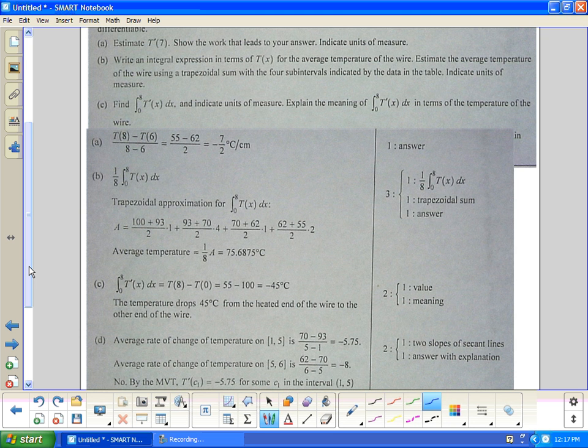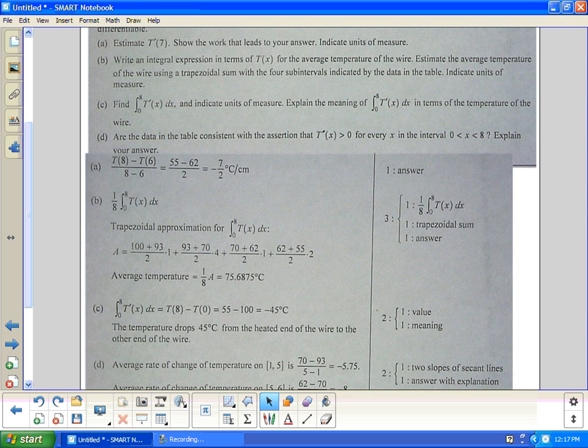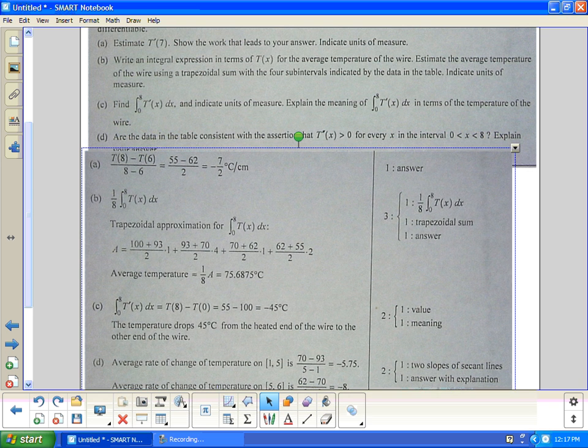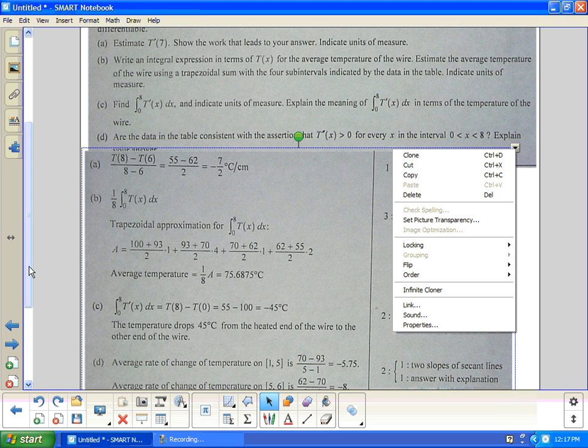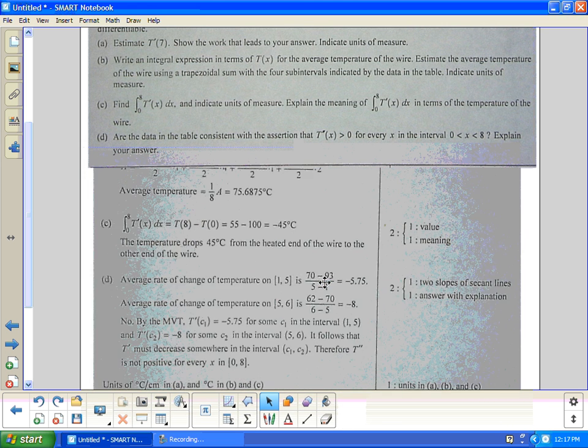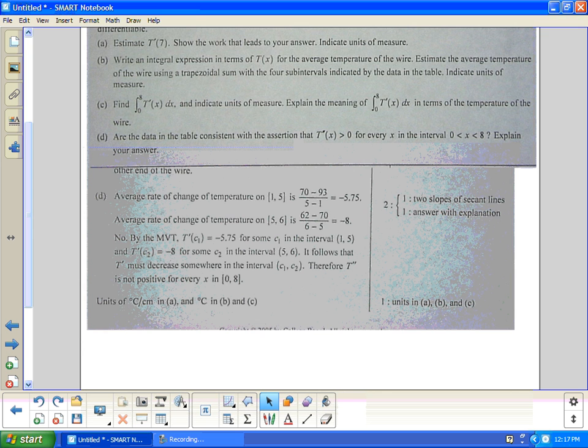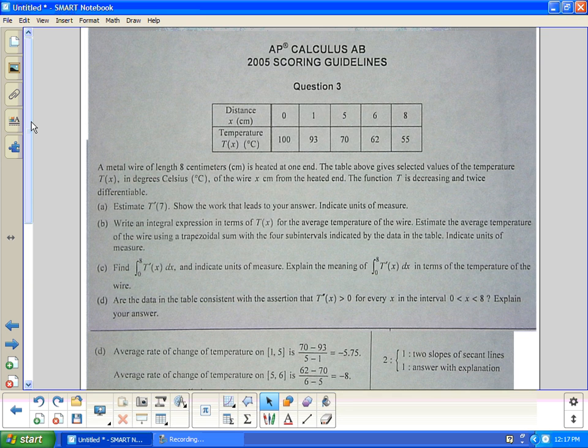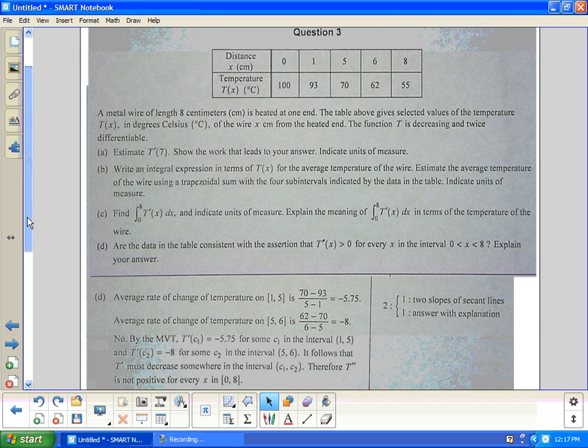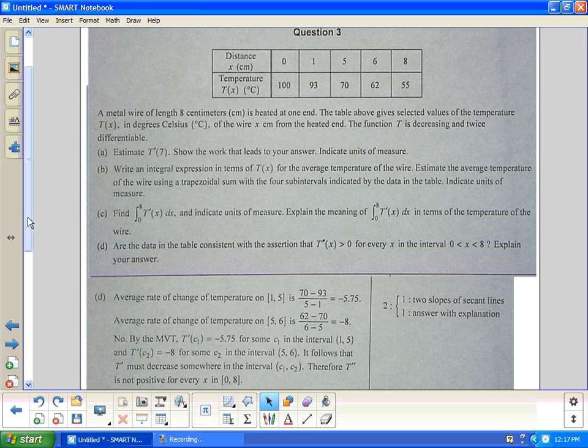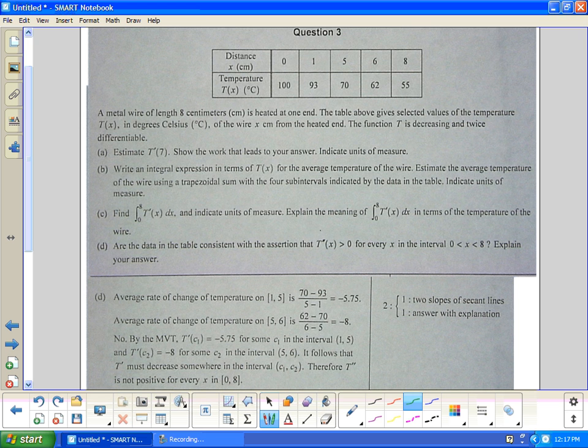I'm going to send this to the back so we can pull it all the way up. Now I should be able to pull this up so D is right under, and it should make it all on the same page. So again, we're on letter D now. Here's our table. Are the data of the table consistent with the assertion that T''(x), that's a double derivative, it's kind of hard to read on the board, that T''(x) is greater than zero for every x in the interval from 0 to 8? Explain your answer.